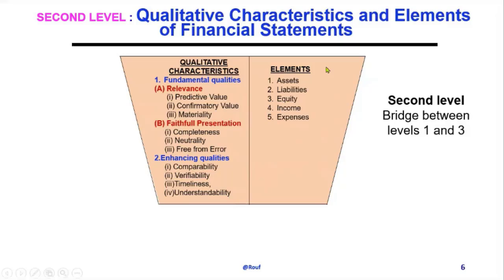The elements of financial statements are: number one, assets; number two, liabilities; number three, equity — that means owner's equity; number four, income or revenue; and number five, expenses. These are the elements of the second level of the conceptual framework, which bridges level one and level three.